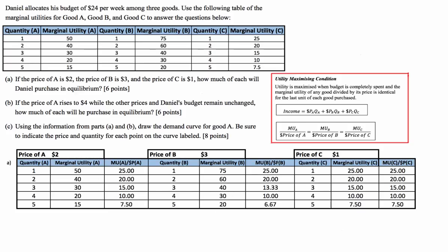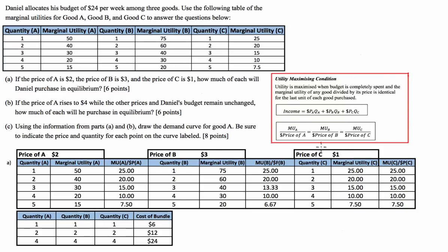On to part A. I've drawn up a table to help us visualise and link together all the pieces of information we've been given. We have the prices, the quantities, the marginal utilities and the marginal utilities divided by the prices for each of goods A, B and C. The best way to check for optimal bundles is to see which combinations of quantities of A, B and C satisfy these two utility maximising conditions.